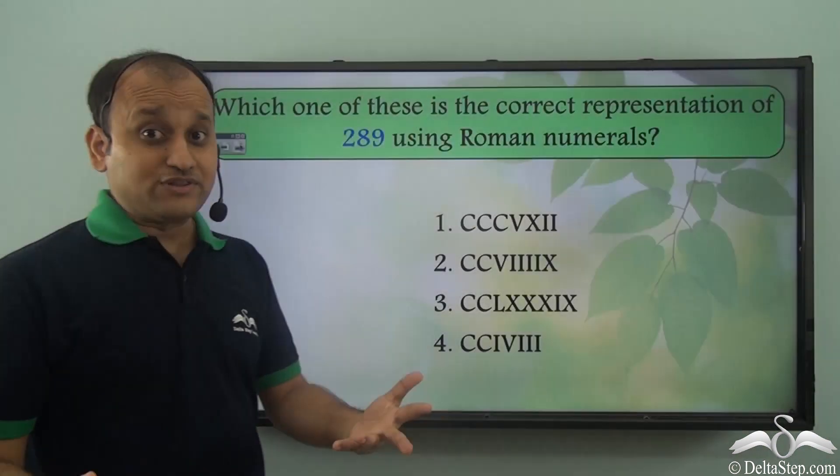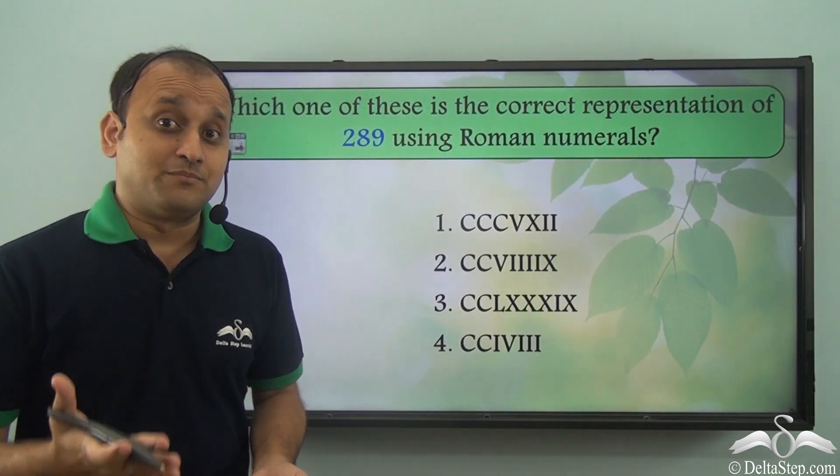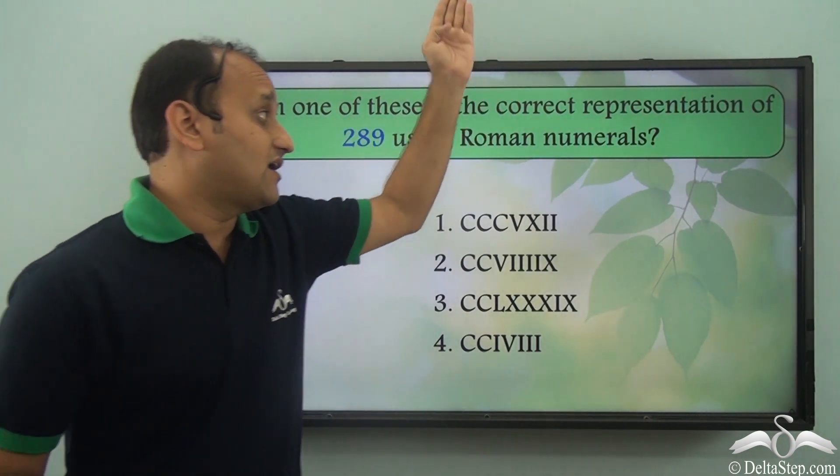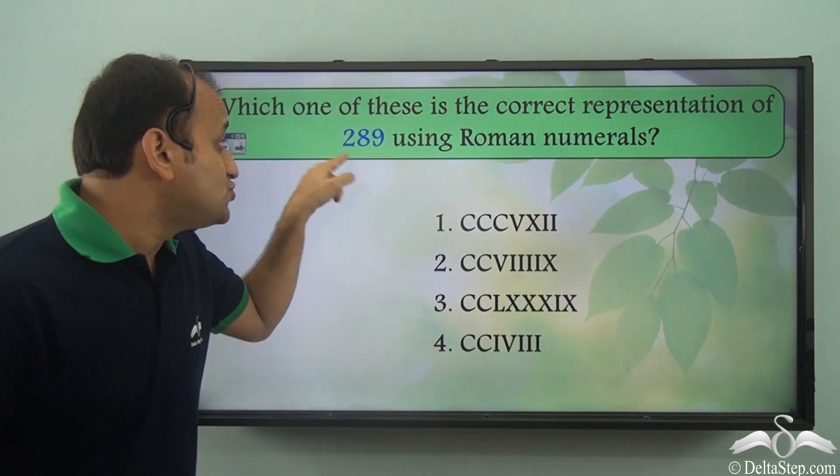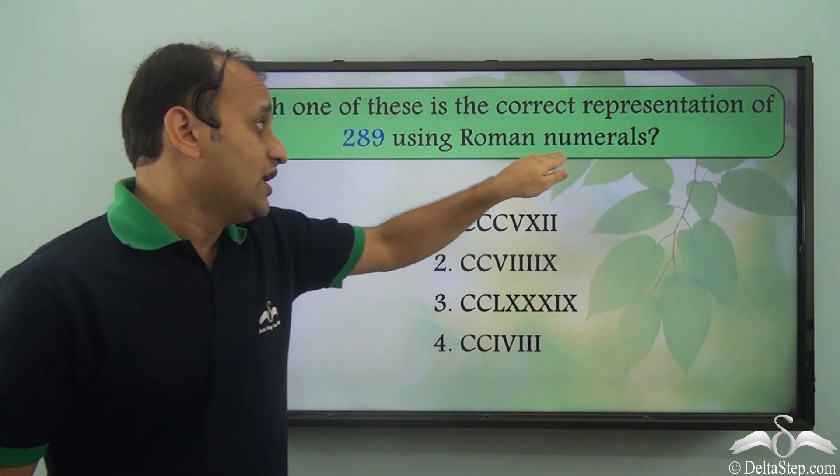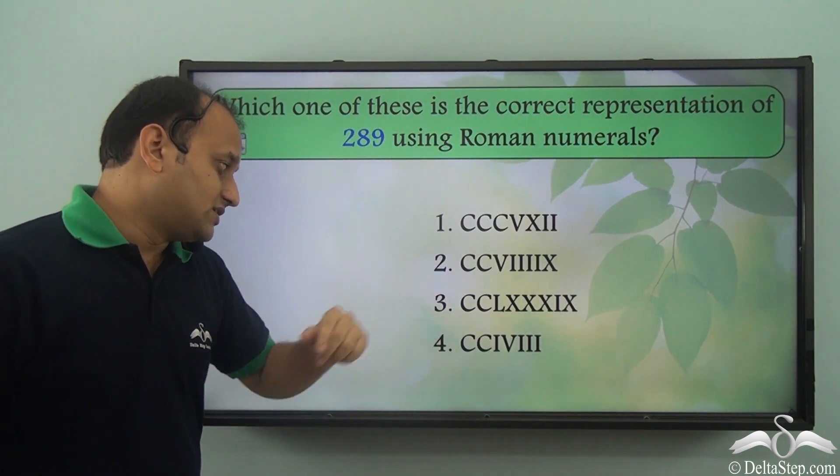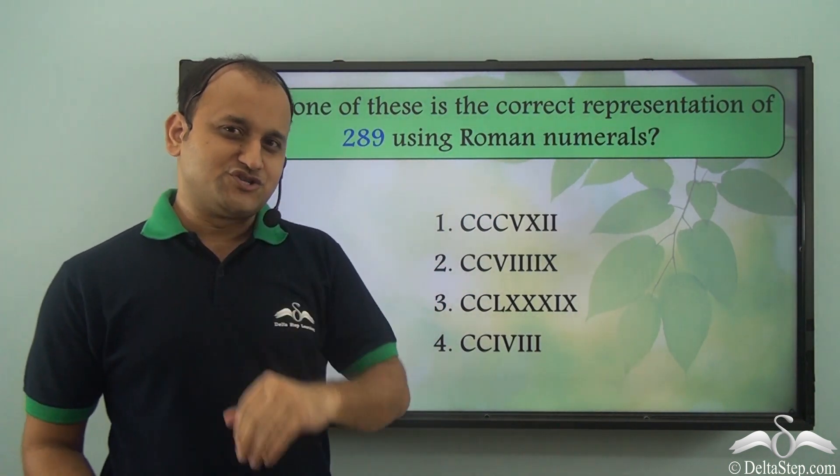So now that you know how to write numbers using Roman numerals, try to answer this question. Which one of these is the correct representation of 289 using Roman numerals? Is it the first one, the second, the third or the fourth? What do you think?